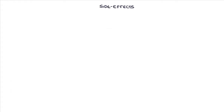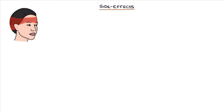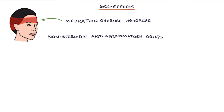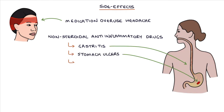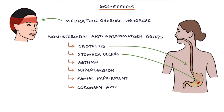Let's talk about the side effects of analgesia. Medication overuse headache is a common side effect of the long-term use of analgesic medications. The key side effects of NSAIDs are gastritis with dyspepsia or indigestion, stomach ulcers, exacerbations of asthma, hypertension or high blood pressure, renal impairment, and coronary artery disease, heart failure, and strokes, which can all be rarely associated with NSAIDs.